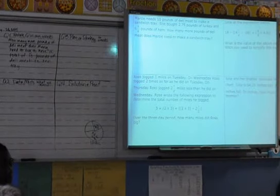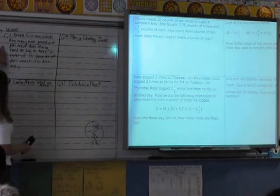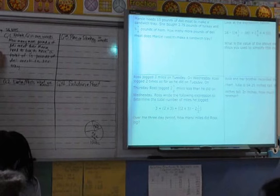Okay, so we have our question restated, which is the way we start with our problem solving model. How many more pounds of deli meat does Marcy need to buy to have a total of 10 pounds of deli meat on her tray?